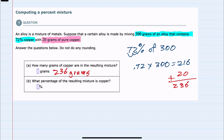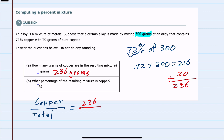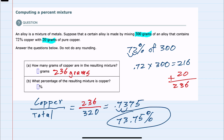We're then asked what percentage of the resultant mixture is copper. To find a percentage, we want to know how much copper is in the mixture and divide it by the total amount of the mixture. We just found that the mixture has 236 grams. Looking back, we had 300 grams of the alloy and 20 grams of pure, so 320 is our total mass. 236 divided by 320 gives us 0.7375. Since we're told not to round, I convert this decimal to a percentage by moving the decimal two places to the right — this would be 73.75% of the new mixture is copper.